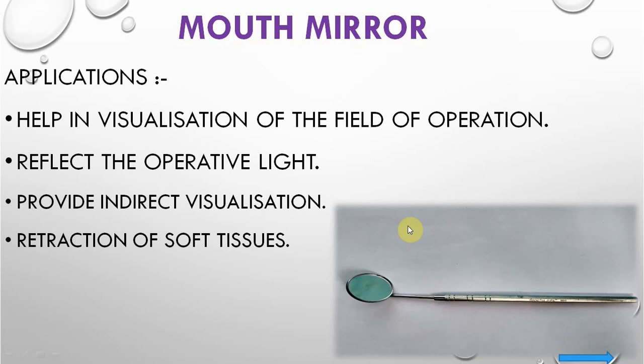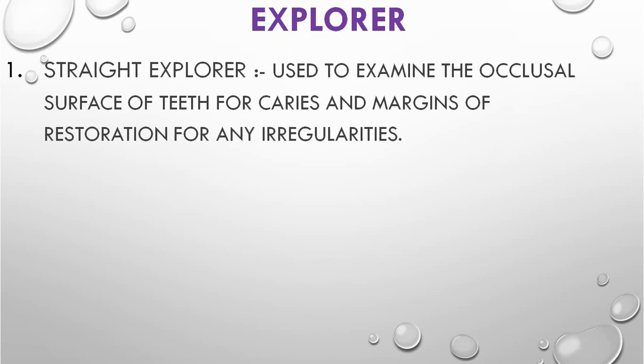The mirror has two reflecting surfaces: the front surface and the rear surface. The front surface provides a clear image, but the rear one does not. Explorers are pointed instruments used for examination of tooth surfaces and restorations to identify any irregularities. They are of three types: straight explorer, curved explorer, and interproximal explorer.